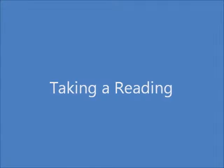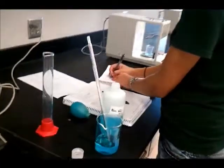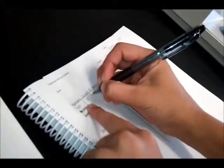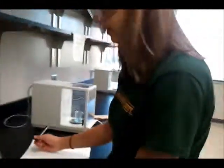After the object is on the pan, wait until the numbers on the screen stop changing. The number that it settles out to will be the mass. The balance can measure out to four decimal places.